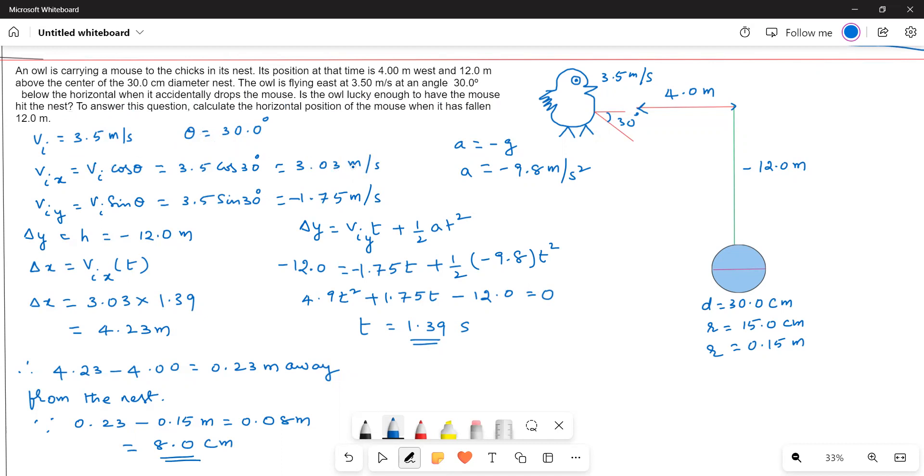Now we have to calculate the parameters. The mouse is traveling with a velocity of 3.5 meters per second, so the initial velocity is 3.5 meters per second.